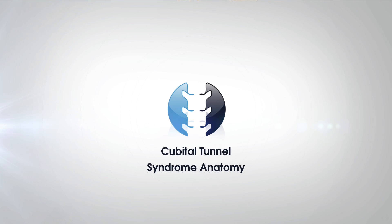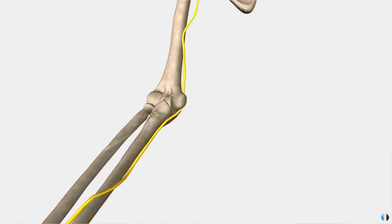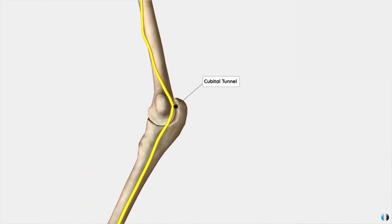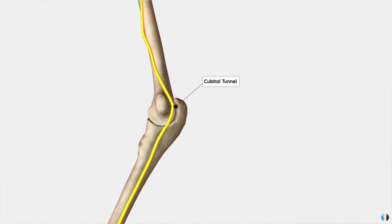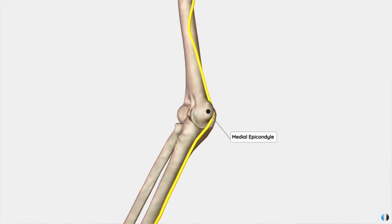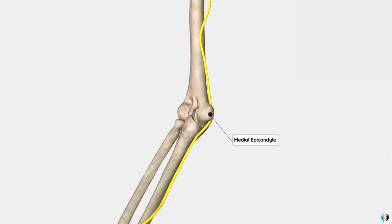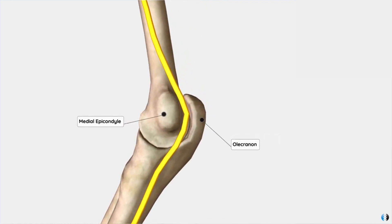By contrast, cubital tunnel syndrome is an elbow-based condition. This is where the ulnar nerve runs through the cubital tunnel where it gets compressed. The cubital tunnel is located on the medial side of the elbow, between the medial epicondyle of the humerus — a clear bony ridge you can feel on the medial elbow — and the olecranon, that bony point at the posterior part of the elbow. When the ulnar nerve gets compressed in that region, it can give off nerve signals into the forearm and hand.